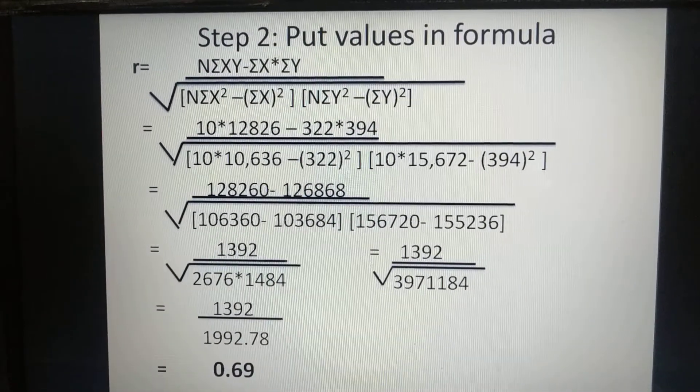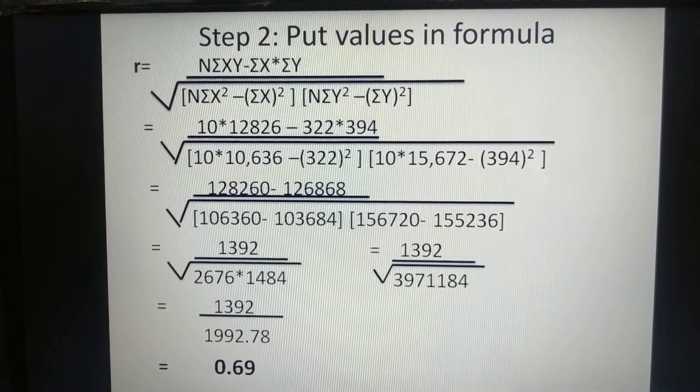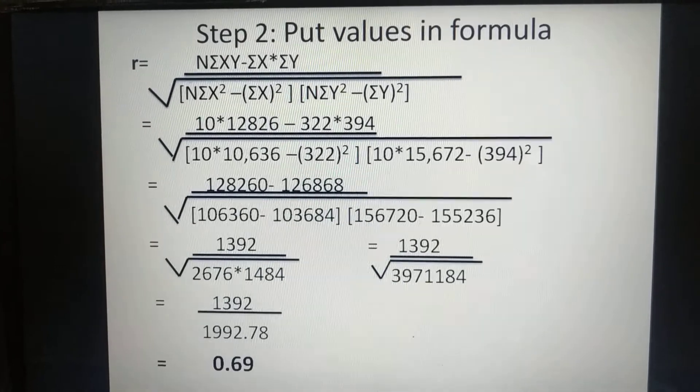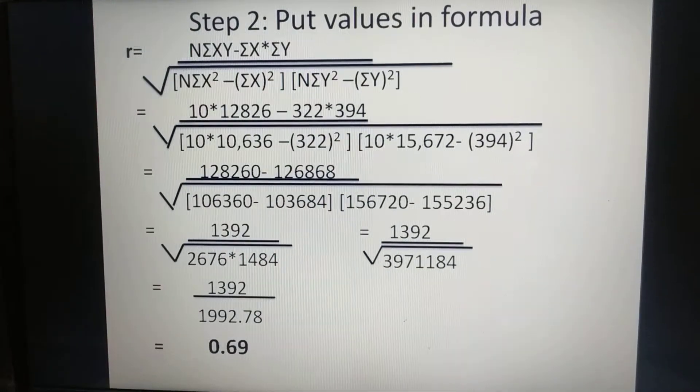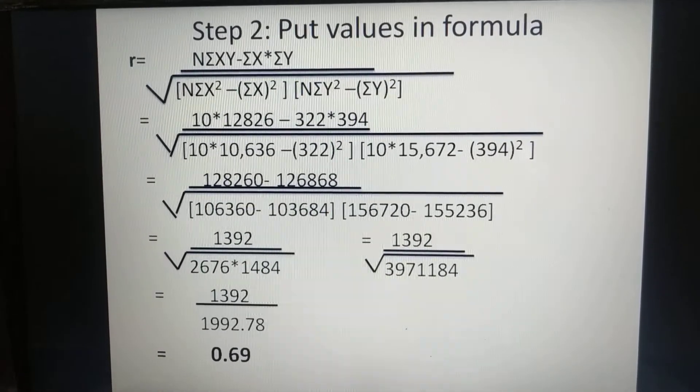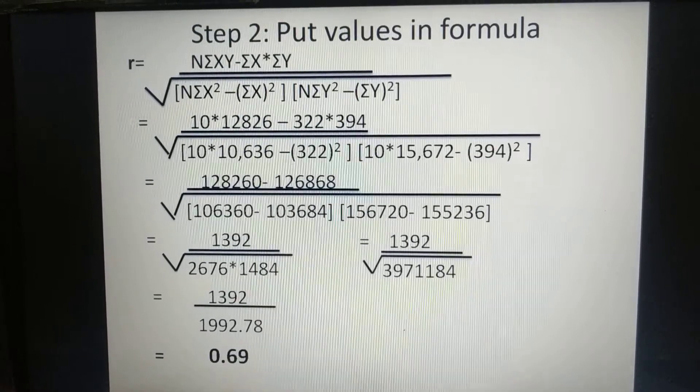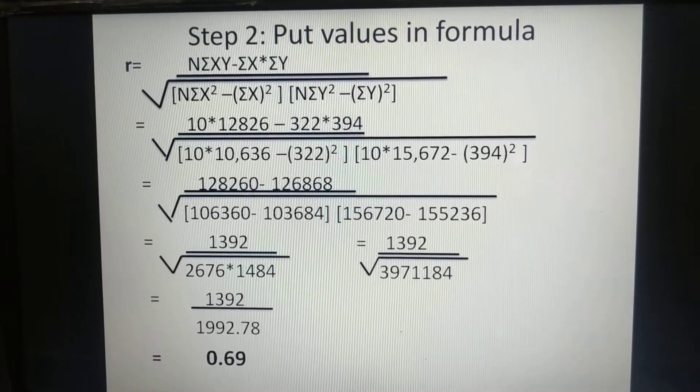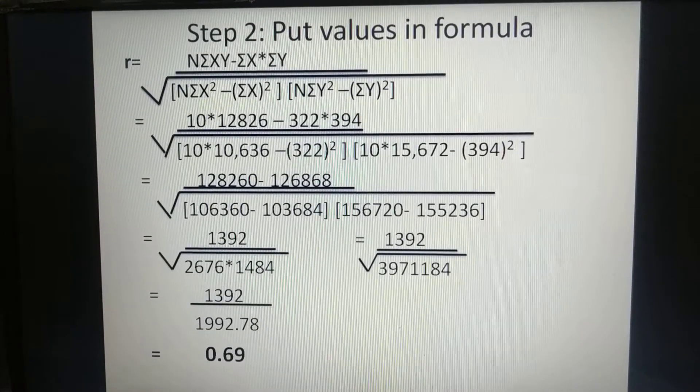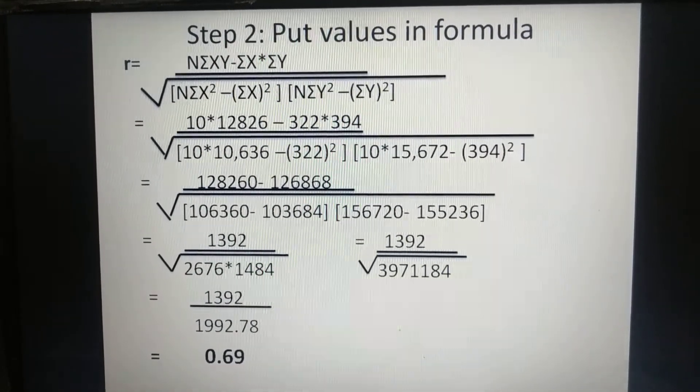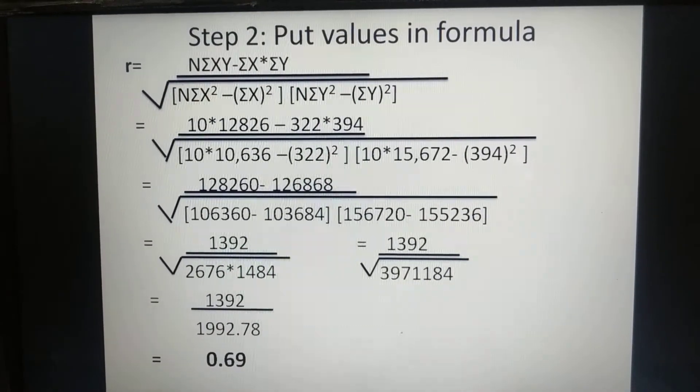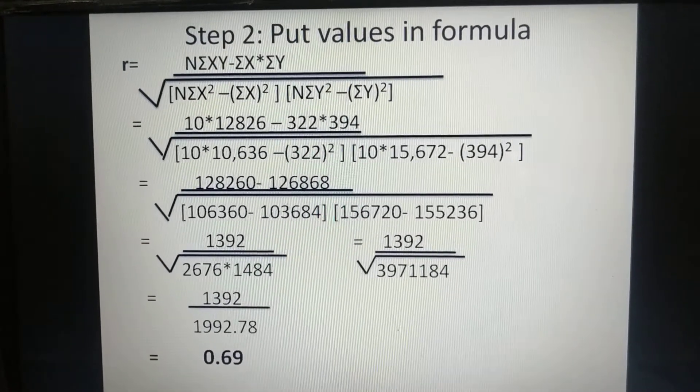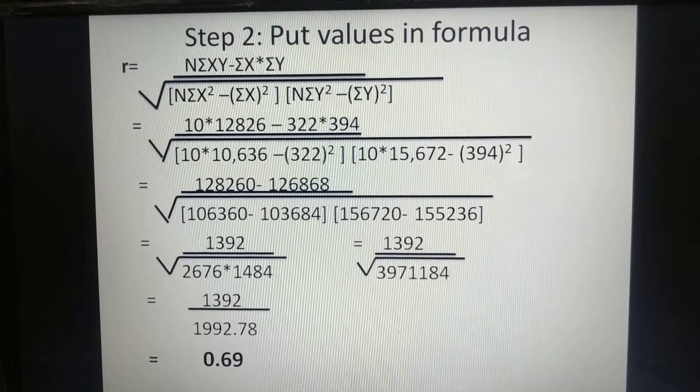N is 10. Submission XY is 12826. Submission X value is 322. Submission Y value is 394. In next step multiply 10 with 12826 and 322 with 394. Below in bracket multiply 10 with 10636 and find square of 322. In another bracket multiply 10 with 15672 and find square of 394.